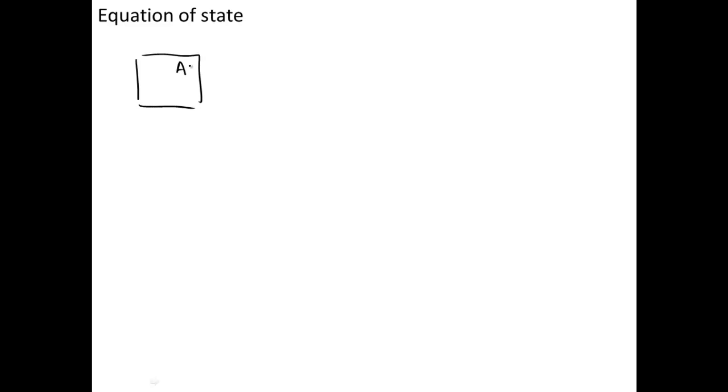Now I'd like to introduce the equation of state. A state can be described by its properties, and from our experience, we don't need to acquire all the properties to fix a state. For example, for a container filled with gas A, if temperature T_A equals 200 Kelvin and P_A equals one bar, we can measure both temperature and pressure, then calculate its density using the law of ideal gas. Internal energy and enthalpy can also be obtained. Thus, two properties — temperature and pressure — are enough to confirm a state.